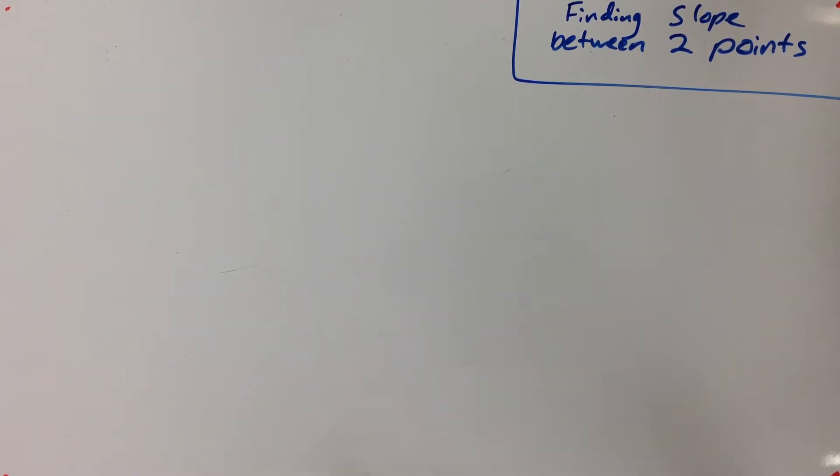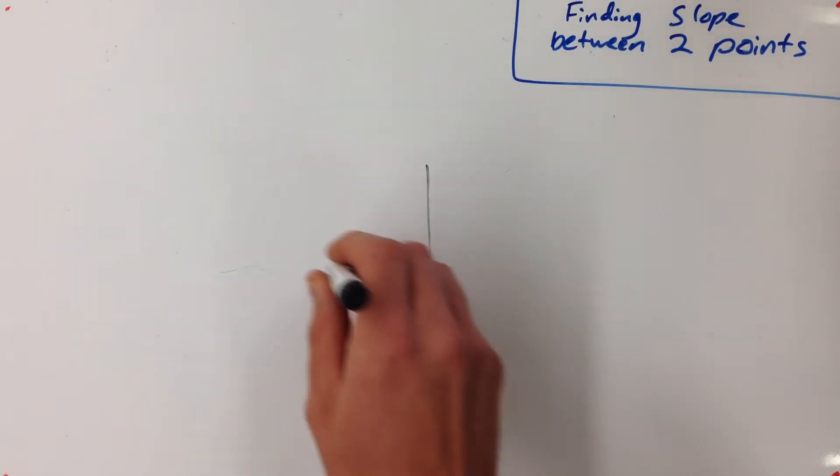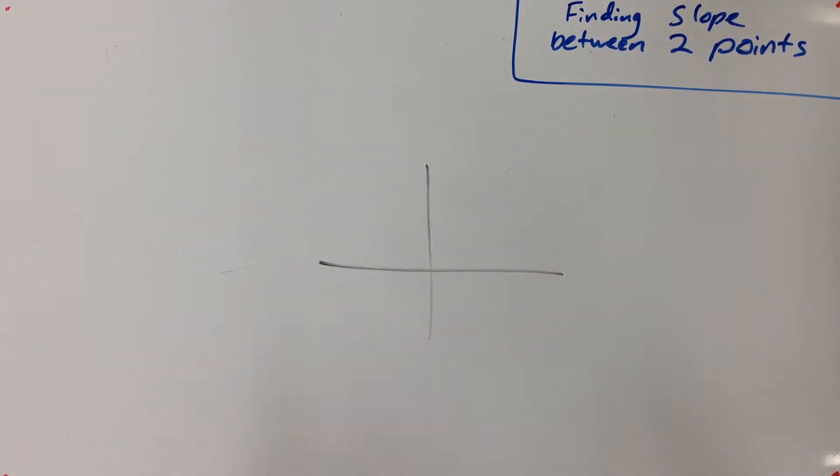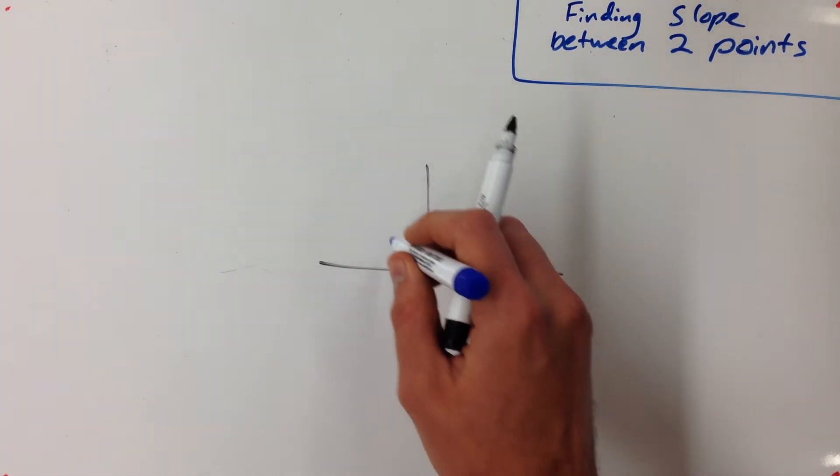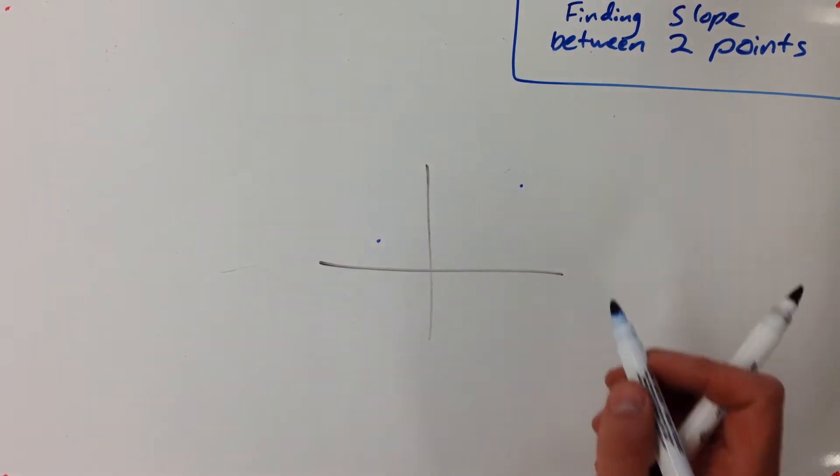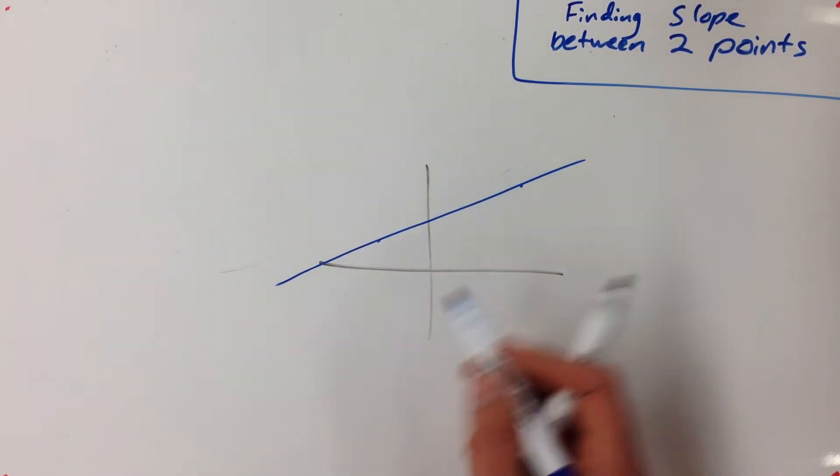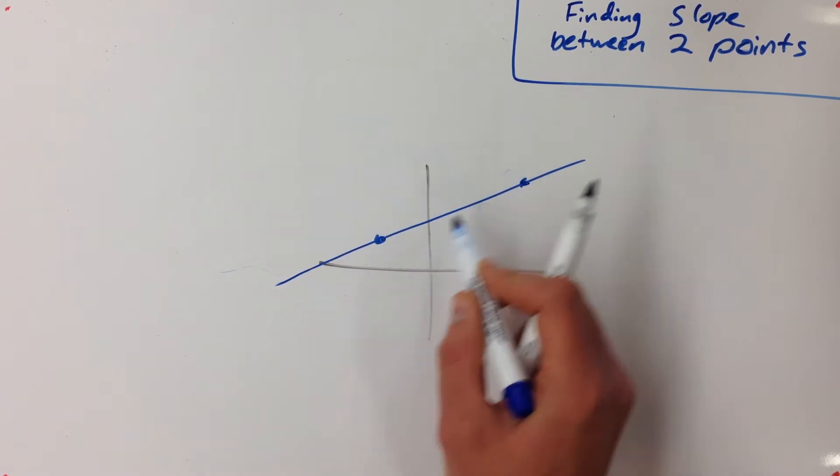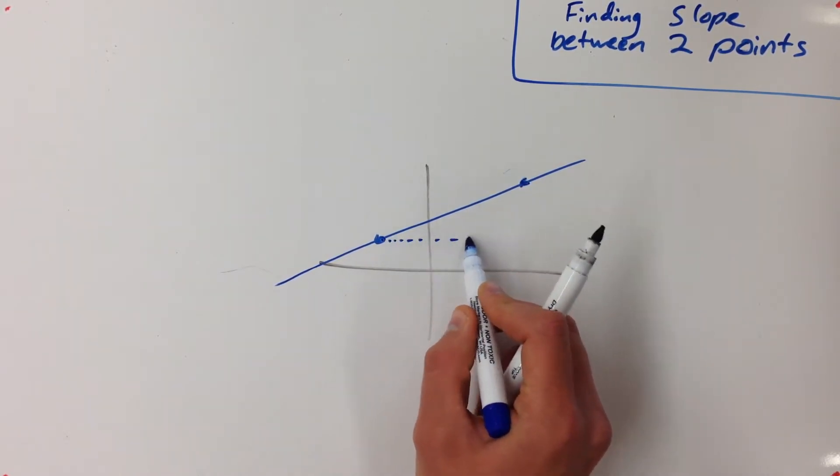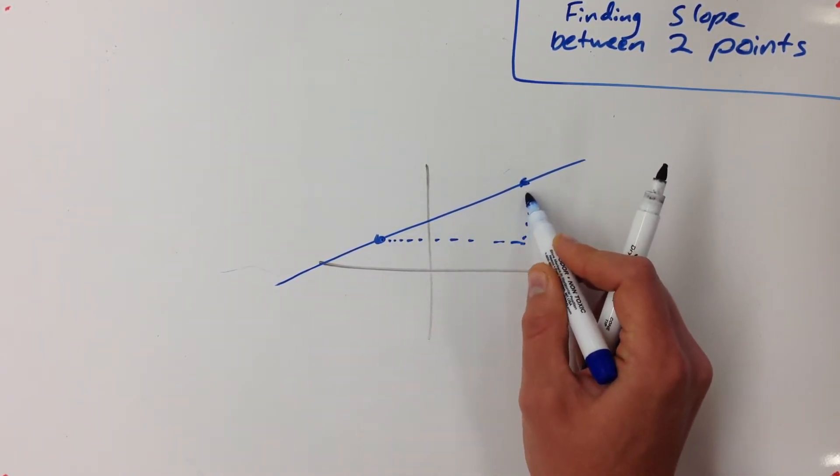Now our old way of doing this was if we had a graph like this and we were given two points, let's say here and here. If we want to find the slope between these two points and of the entire line in general, what we would do is say well how far over do we go and how far up do we go?